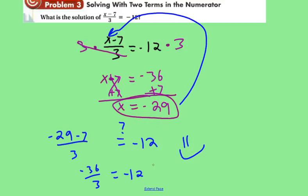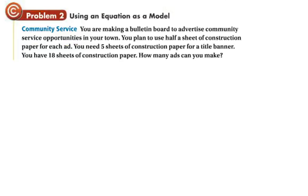Alright. I'm going to leave you with this problem. A good word problem. It says community service. Alright, so you're making a bulletin board to advertise community service opportunities in your town. You plan to use a half sheet of construction paper for each ad. You need 5 sheets of construction paper for a title banner. And you have 18 sheets of construction paper total. So when you see that, you should always say equals 18. How many ads can you make? Why don't you pause it for a second and see if you can write the equation first and then solve it. I'm going to write the equation as well.